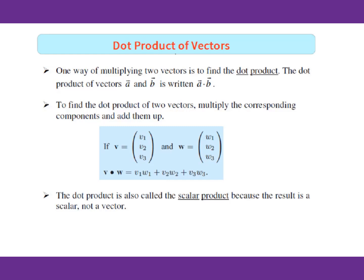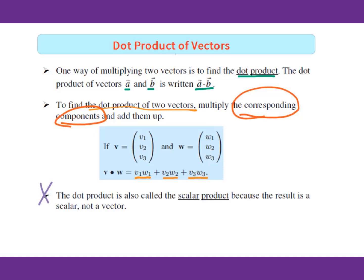Today's lesson is about the dot product of vectors. One way of multiplying two vectors is to find the dot product. The dot product of vector A and vector B is written as vector A dot vector B. To find the dot product of two vectors, multiply the corresponding components and add them up. For example, vector V dot vector W equals V1·W1 plus V2·W2 plus V3·W3. Remember, the dot product is also called the scalar product because the result is a scalar, not a vector.